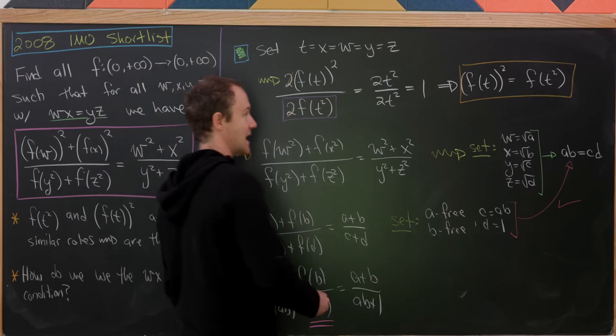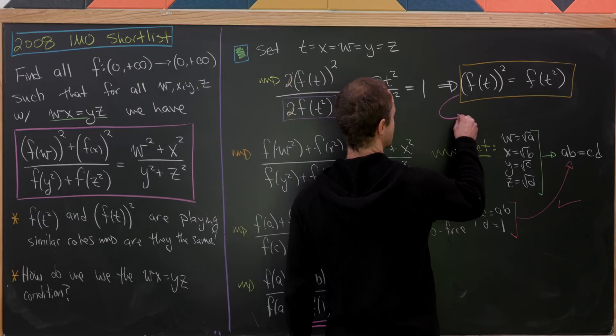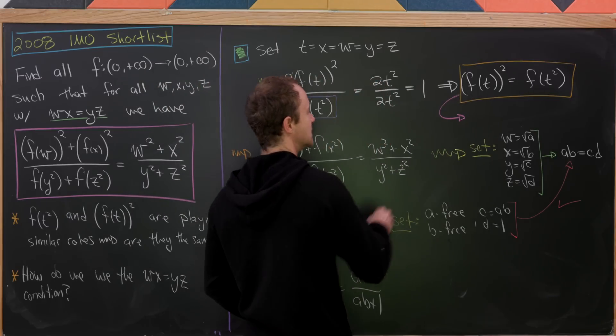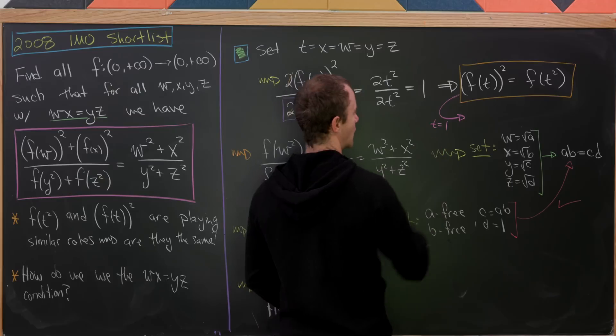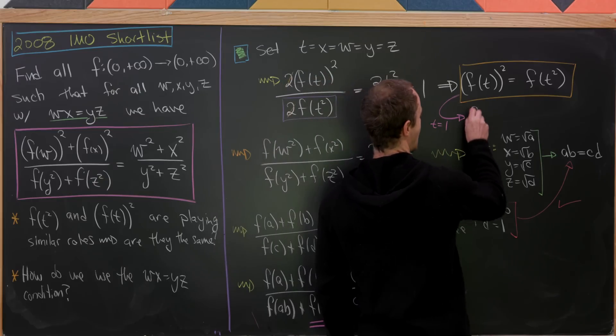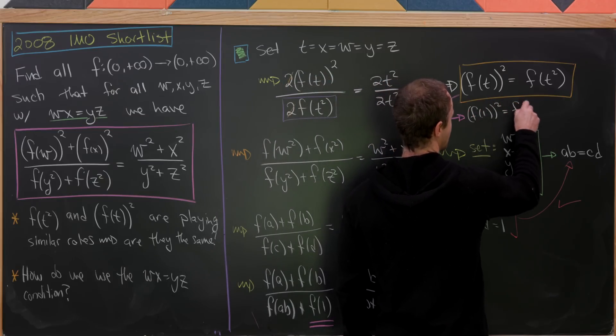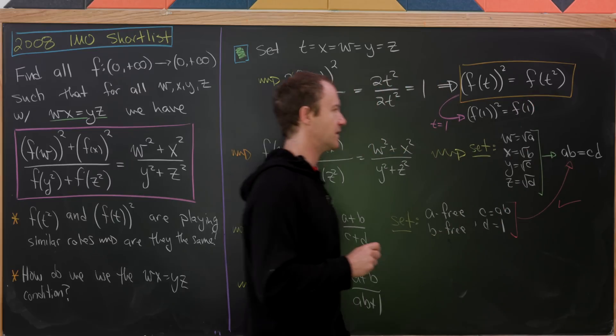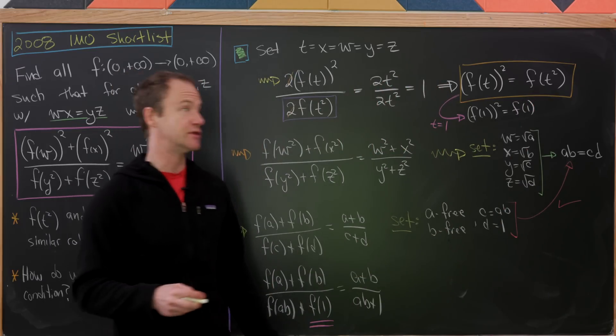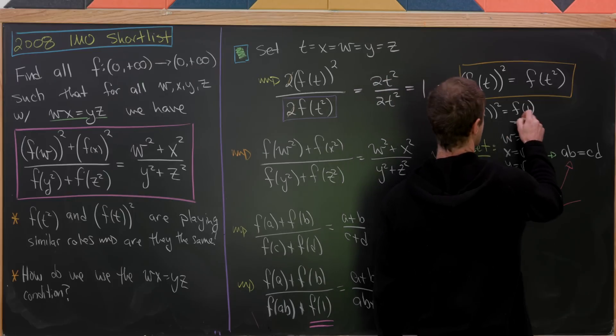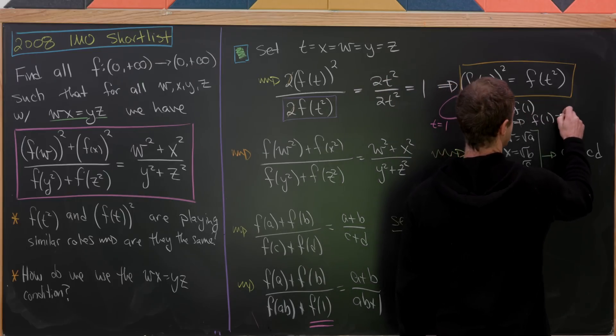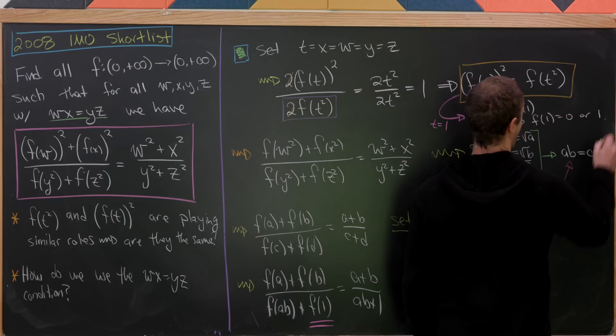Well we can, and we can do that with this equation that we derived a while ago. So if we plug t equals 1 here, we'll have f(1)² equals f(1). But there are only two solutions to that in the real numbers. We have f(1) equals zero or one.